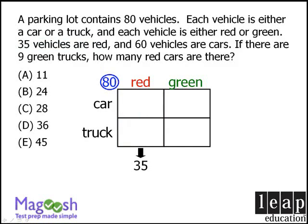Now if we have 80 vehicles altogether and 35 of those vehicles are red, we can conclude that the remaining 45 vehicles must be green. Now some of those green vehicles are cars and some are trucks. However, what we do know is that the sum of those two boxes must be 45.